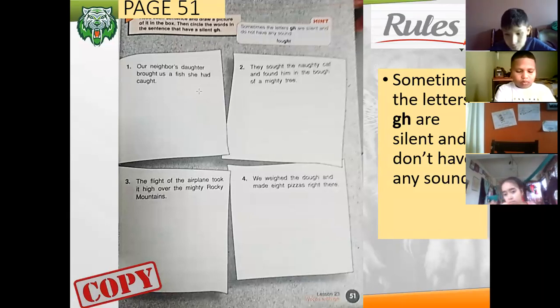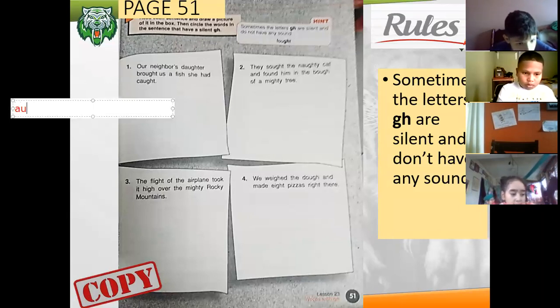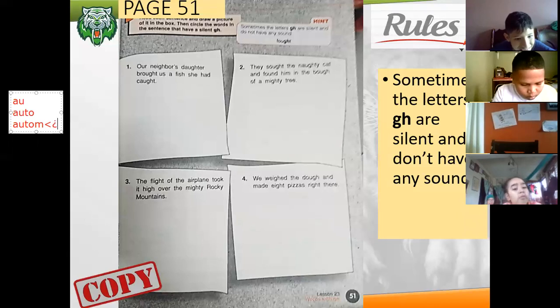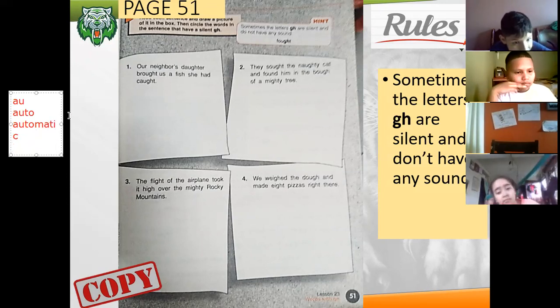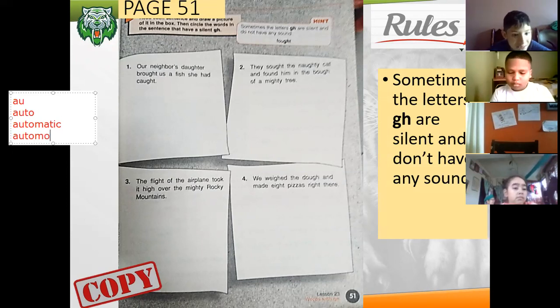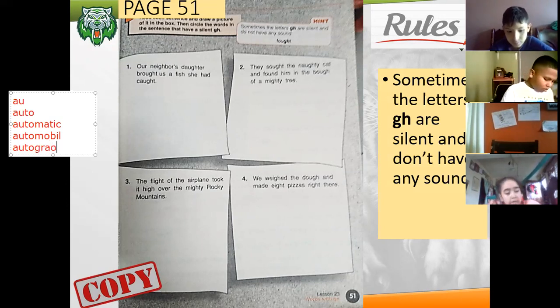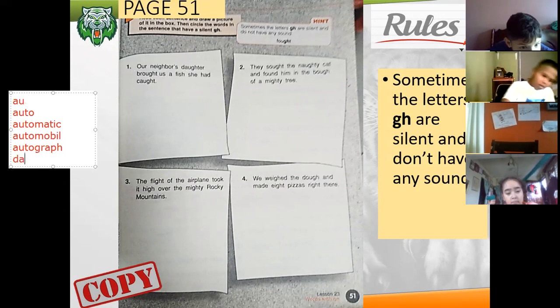Our neighbor's daughter. Daughter, no it's not down. This is that, it's pronounced 'aw.' Examples: I'm going to give you some examples. Auto, like automatic. It's automatic. Auto like automobile.